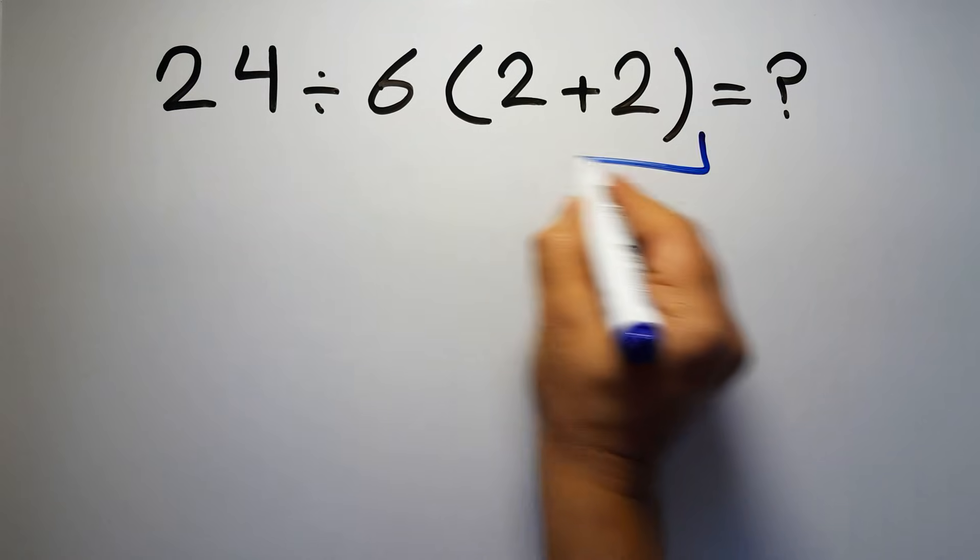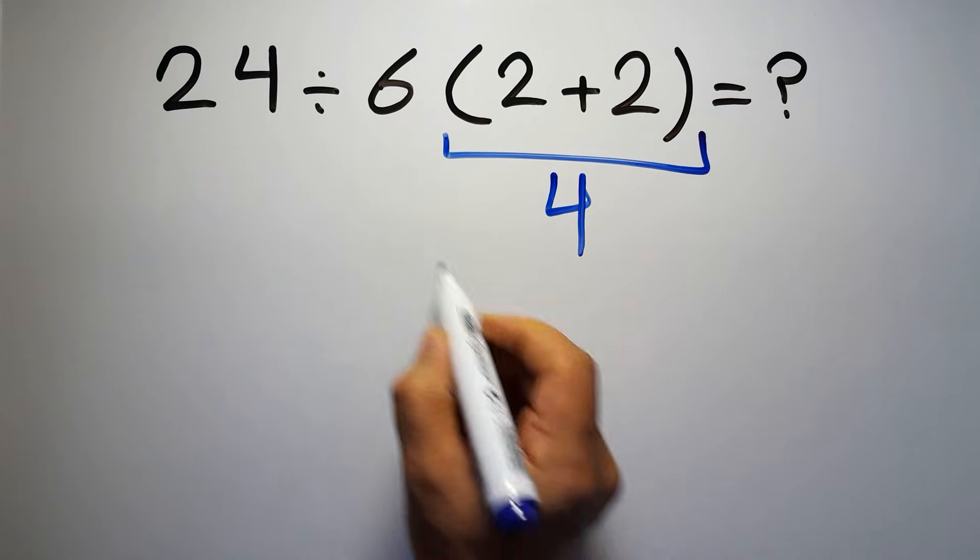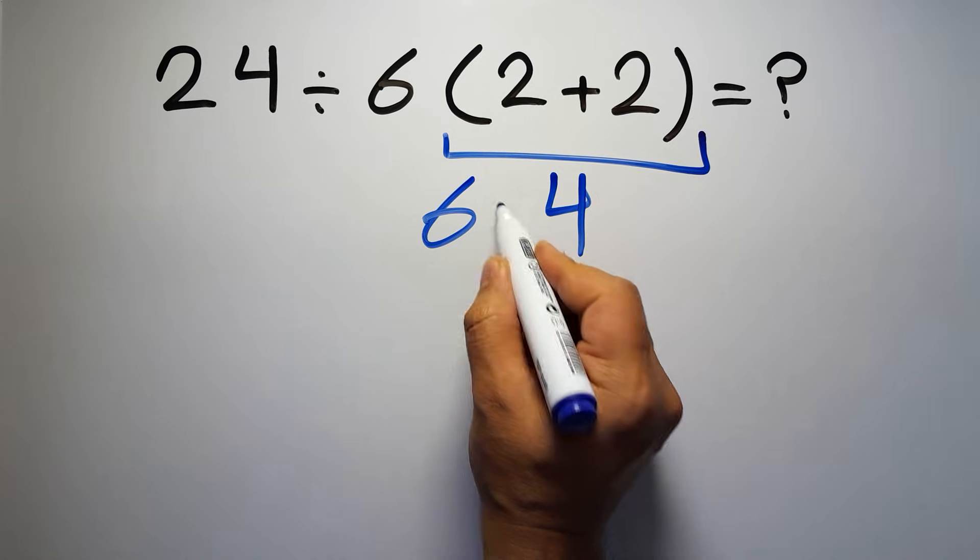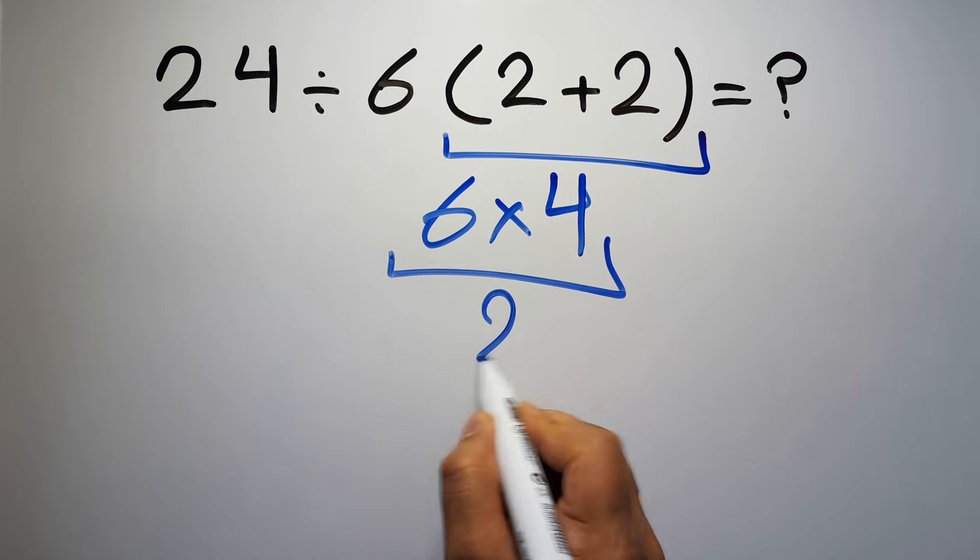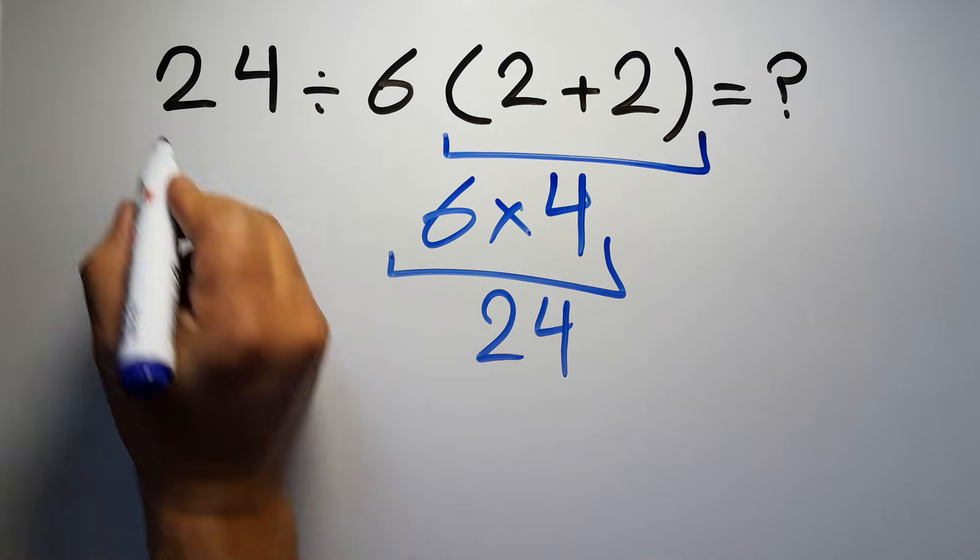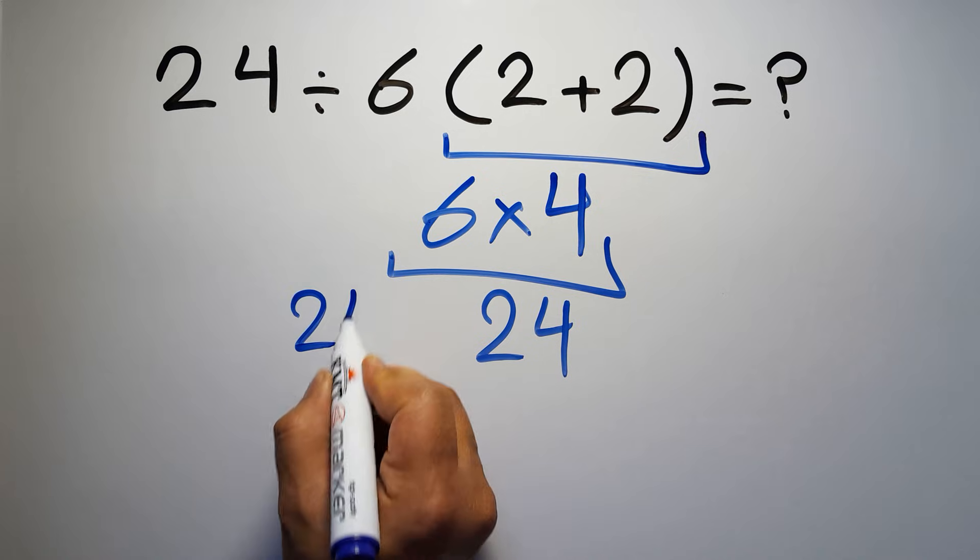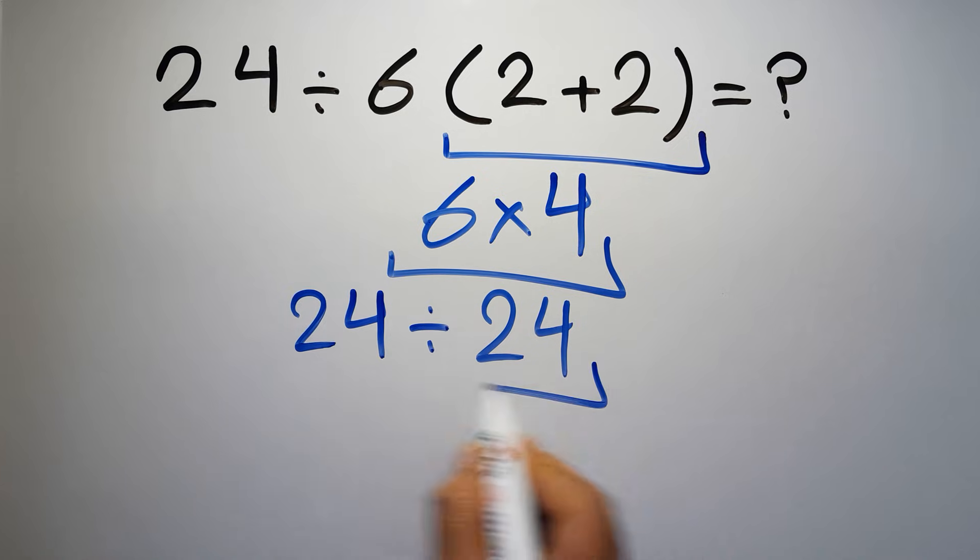2 plus 2 gives us 4, and 6 times 4 equals 24, so 24 divided by 24 is just 1.